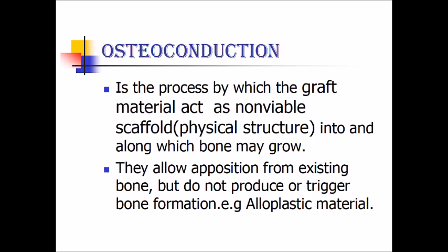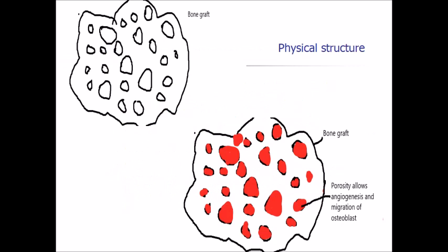Osteoconduction is the process by which graft material acts as a non-viable scaffold — it only acts as a physical structure into and along which new bone can grow. They allow apposition from existing bone but do not produce or trigger bone formation. In the diagrammatic representation, the graft is placed in the osseous defect with various pores that allow blood to move in. This porosity allows angiogenesis and migration of osteoblasts. Once osteoblasts migrate into the bone graft, new bone formation takes place, and the material resolves over time. Almost all bone grafts have this property of osteoconduction.